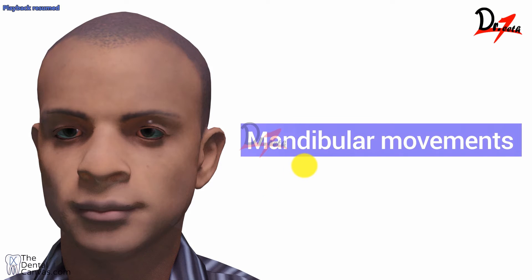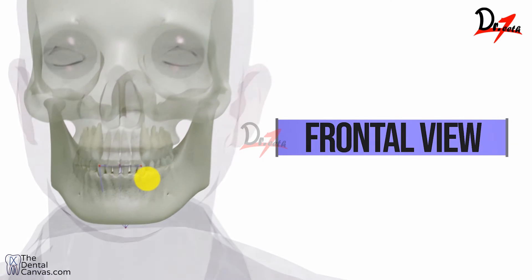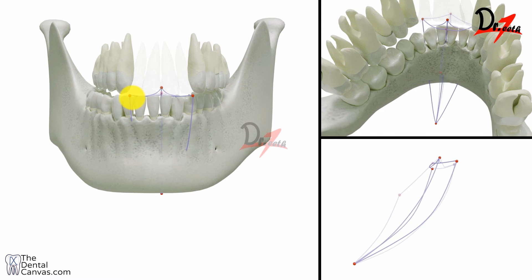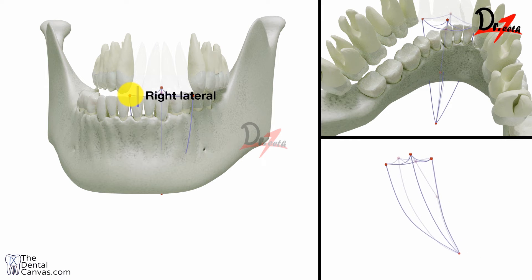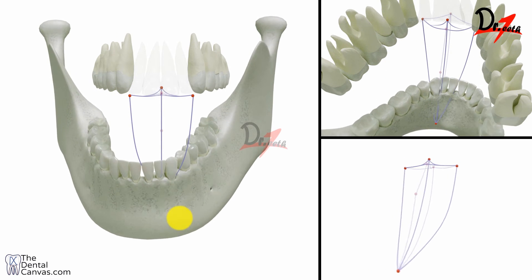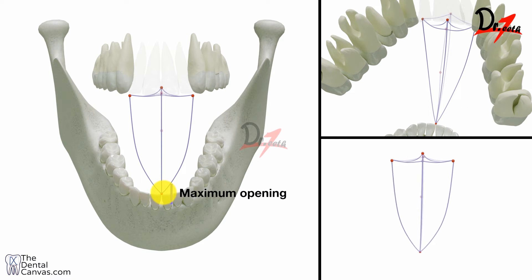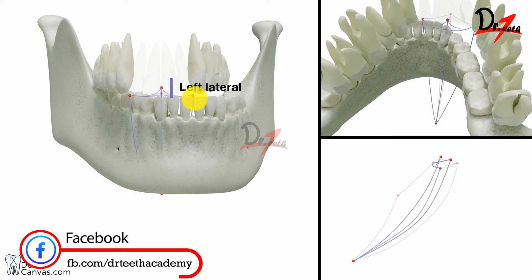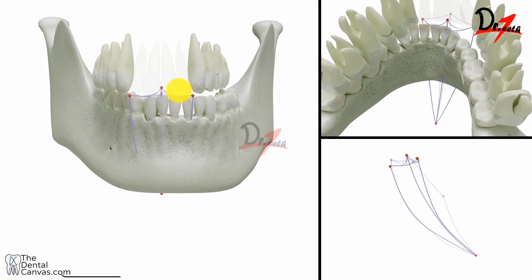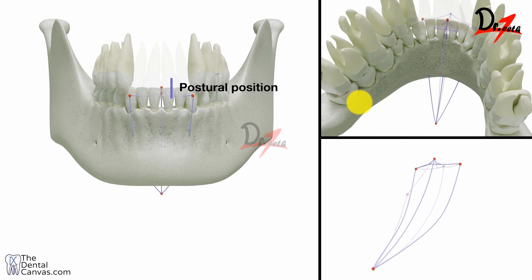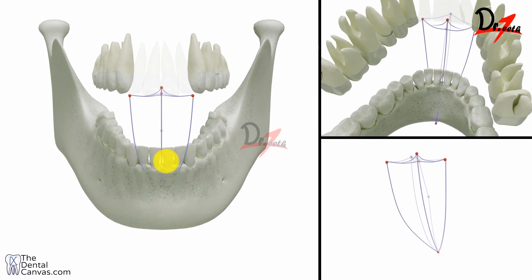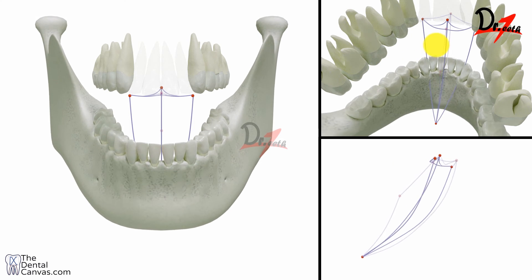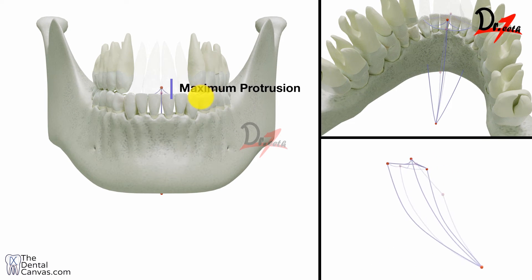Now let us have a look at the movements in the frontal view. Here you can appreciate a characteristic shield tracing. This is the intercuspal position. When the subject moves to the right, this point here will be the right lateral. When we have maximum opening, this point here will be the maximum opening. The dark purple color represents the shield. Then we have the left lateral, the postural position, and then opening again — maximum opening. When the subject protrudes, you can see that maximum protrusion here.